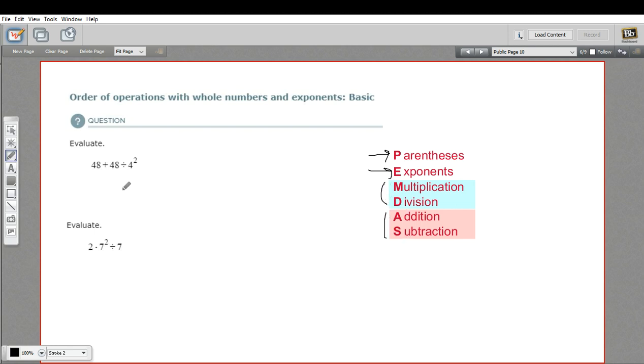So we don't have any parentheses here, but we do have exponents, so we need to do those parts first. So we're not going to do 48 divided by 4, we're going to do the 4 squared part first.